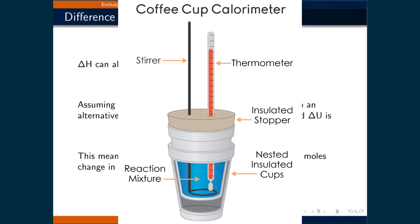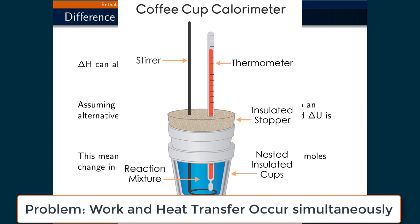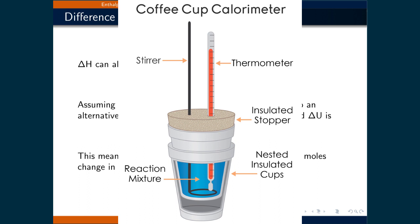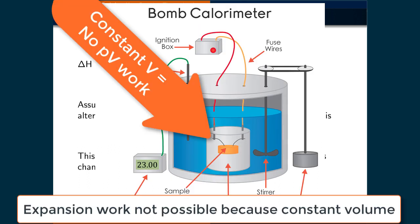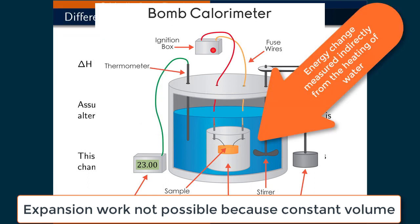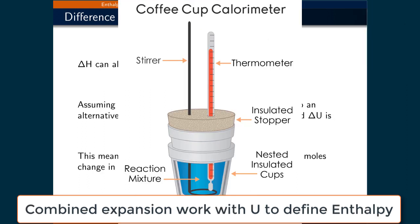Recall the problem that we started with. We had a chemical process where both work and heat transfers occur, and we're looking for a convenient way to measure the energy difference between the initial and final states at constant pressure. This wasn't a problem when the volume was held constant since no expansion work is possible, so we can measure the energy change by measuring the change in temperature of a substance with a known heat capacity in thermal contact with the process. What we have done is a simple rearrangement of terms to combine the internal energy and the expansion work into something we call enthalpy.